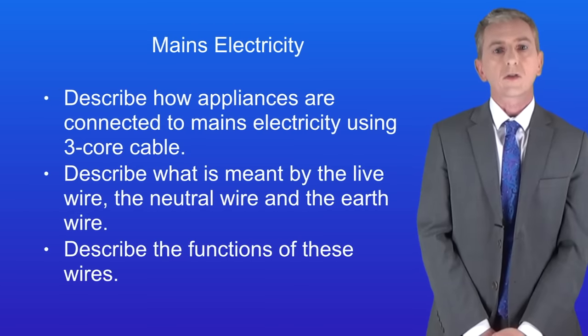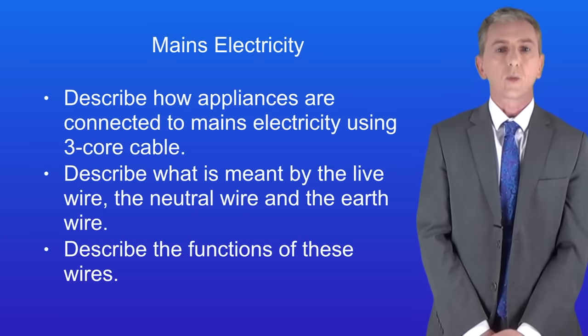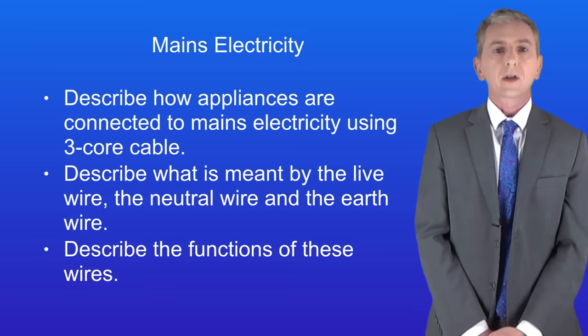Okay so hopefully now you should be able to describe how appliances are connected to mains electricity using three core cable. You should then be able to describe what's meant by the live wire, the neutral wire and the earth wire. And finally you should be able to describe the functions of these wires.